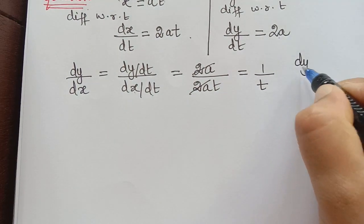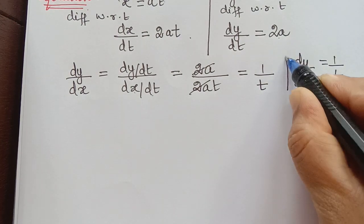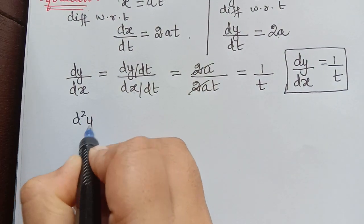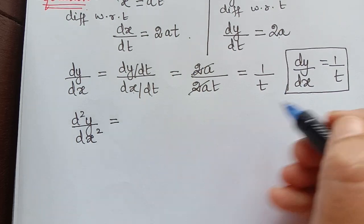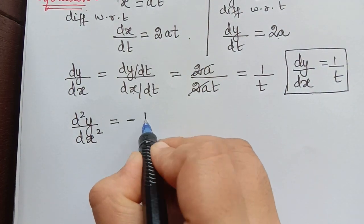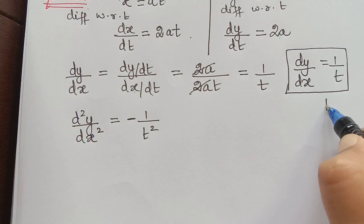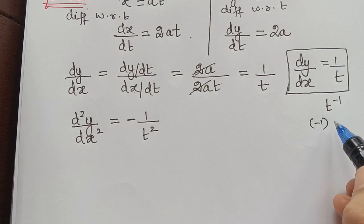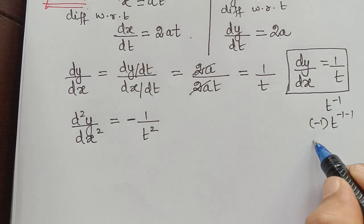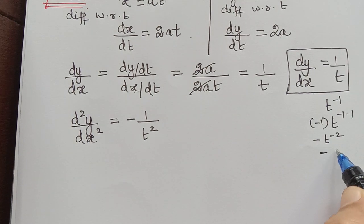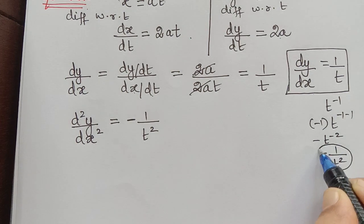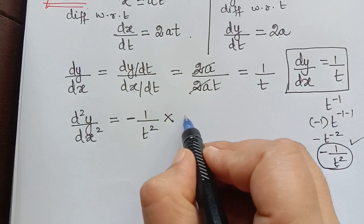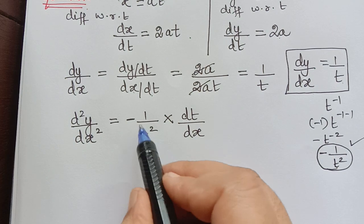Now using dy/dx equals 1/t, we shall find d²y/dx². We are differentiating 1/t with respect to x. The differentiation of 1/t — which can be written as t to the power minus 1 — using the power rule nx^(n-1) gives minus t to the power minus 2, that is minus 1/t squared. Then we must also multiply by dt/dx.